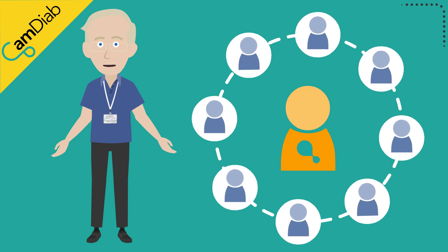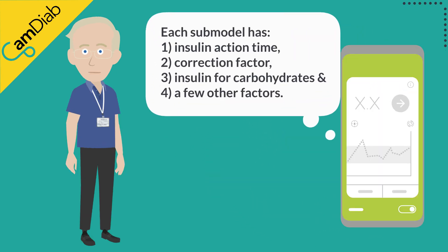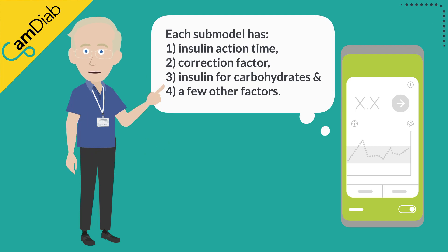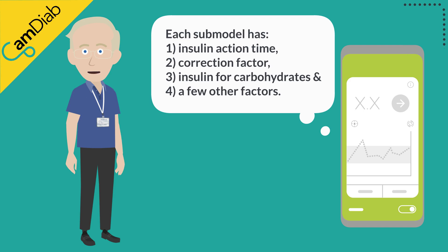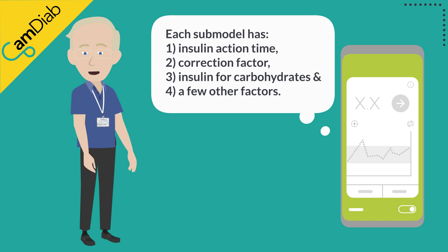Sub-models are ranked according to how well they fit the observed glucose levels. Each sub-model includes a number of parameters: a personalized insulin time to peak or insulin action time, markers of insulin sensitivity or correction factor, the rate of carbohydrate appearance from the gut which estimates the insulin requirements for carbohydrates on board, and a few other factors. Each sub-model's parameters differ slightly from one another.